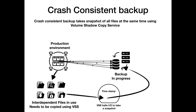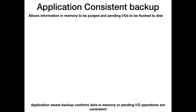Let's talk about application consistent backups. It allows information in memory to be purged and pending IOs to be flushed to the disk. When we spoke about crash consistent backup, there was a challenge in terms of how to confirm data in memory or pending IO operations — whether those were consistent or not.